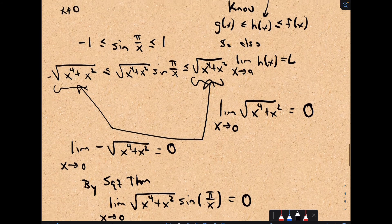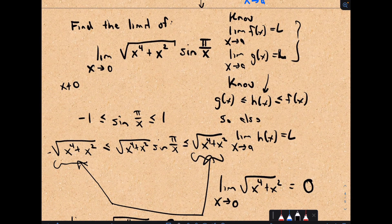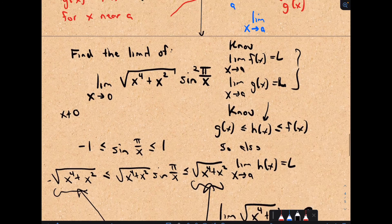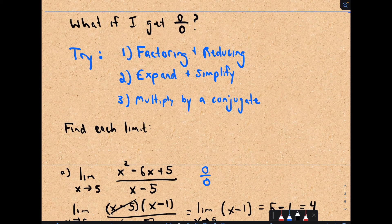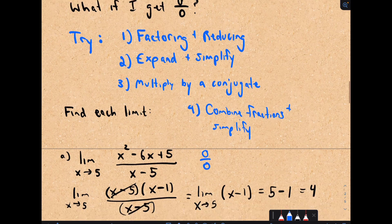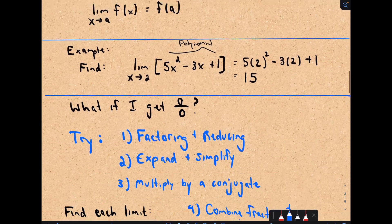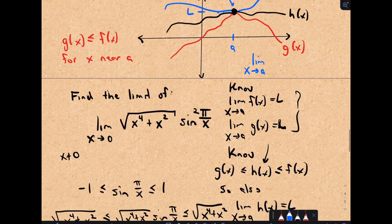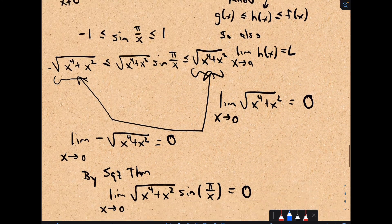Keep an eye out for these types of limit questions early in your Calc 1 course. If you see something involving sine or cosine, bound it between -1 and 1 — or if it's sine squared, between 0 and 1. These are very common techniques for limits: factoring and reducing, expanding and simplifying, multiplying by a conjugate, and combining fractions. The squeeze theorem you won't use that often, but keep it in your back pocket because it may crop up.